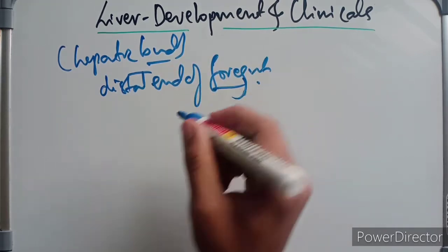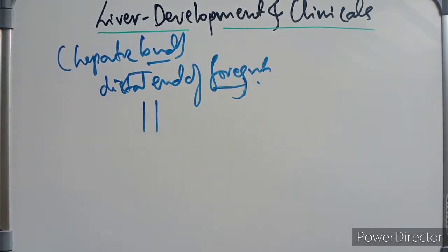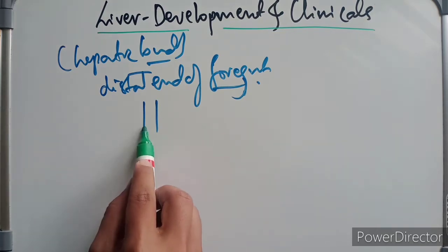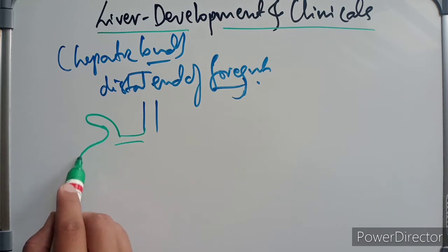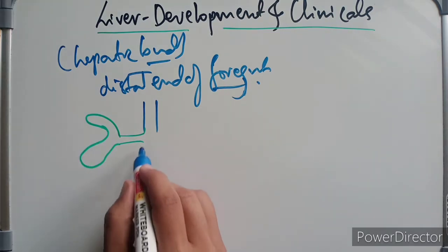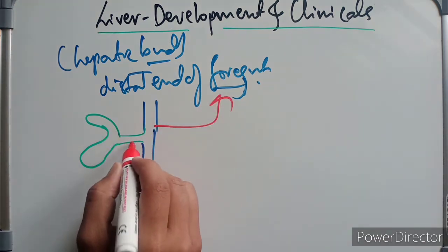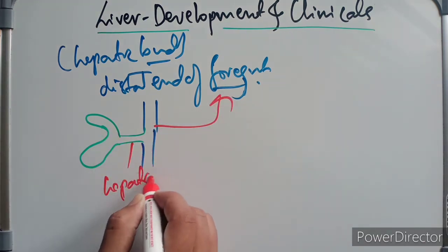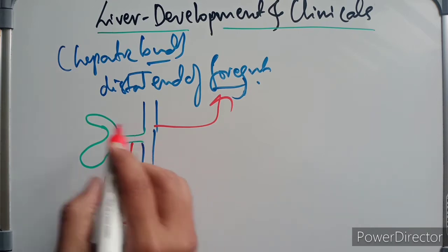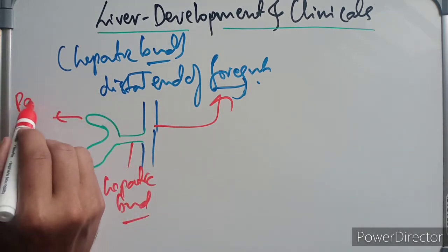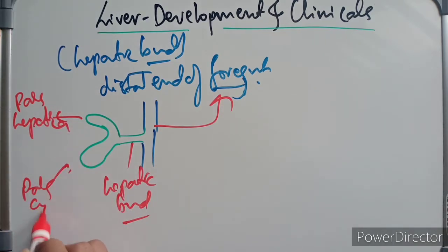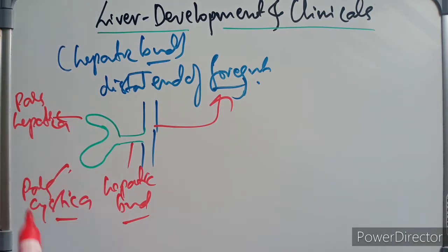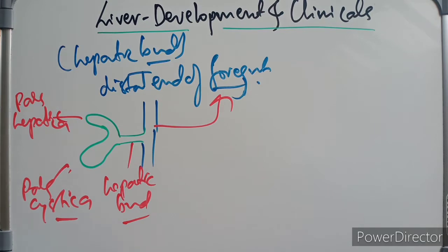The two buds arising from the hepatic bud are known as the pars cystica and the pars hepatica. The hepatic bud arises from the foregut, extends cranially, and bifurcates into these two branches: the pars hepatica and the pars cystica.